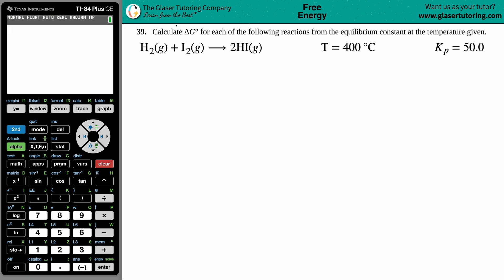Number 39: Calculate the ΔG° for each of the following reactions from the equilibrium constant at the temperature given. We have H₂ gas plus I₂ gas yields 2HI gas. They give us a temperature of